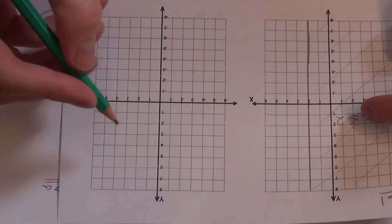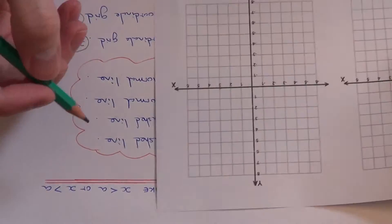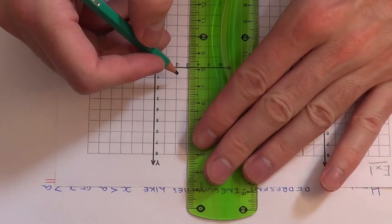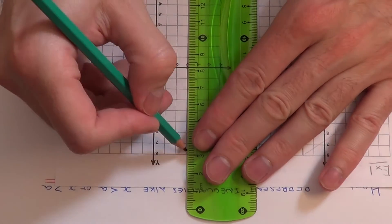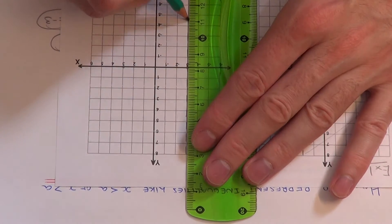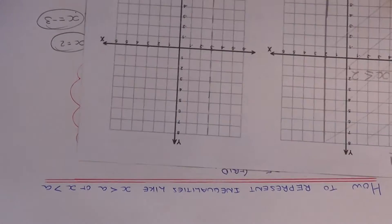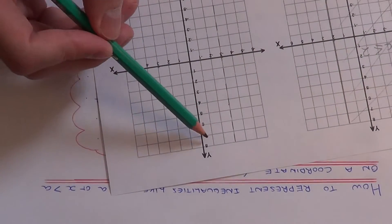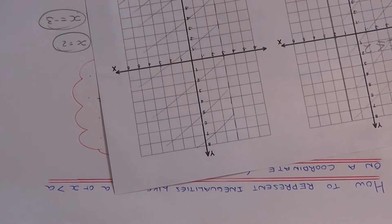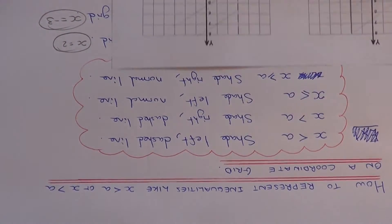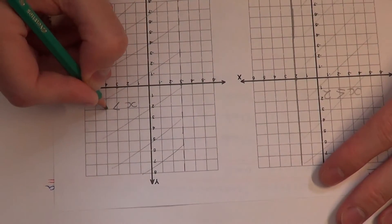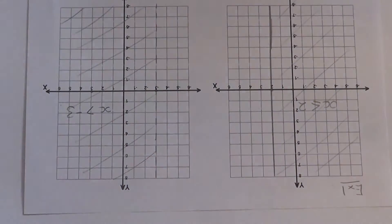So we've got x equals minus 3, and we do a dashed line. We then shade to the right because we're doing more than. And we just need to mark this area as x is more than minus 3. Thanks for watching.